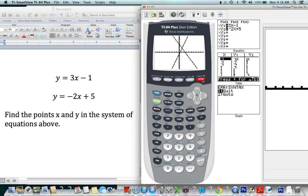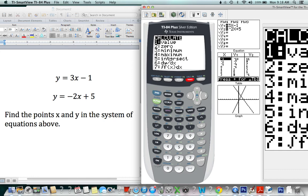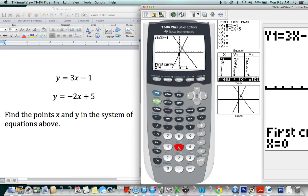Now that we have our graphs, in order to find the point of intersection which you see right here, we need to go to 2nd, Calc (which is the trace button), and we're looking for intersect. That's number 5, or you can just scroll to 5.